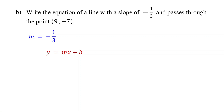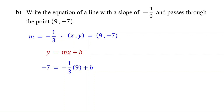Since the point lies on the line, it is a solution to the equation, meaning we have specific values for x and y. Substitute these values into the slope-intercept form: replace y with negative 7, m with negative 1 third, and x with 9. Now solve for b. 9 divided by 3 is 3, and negative 1 times 3 is negative 3.